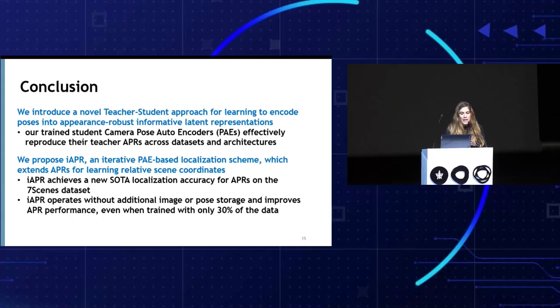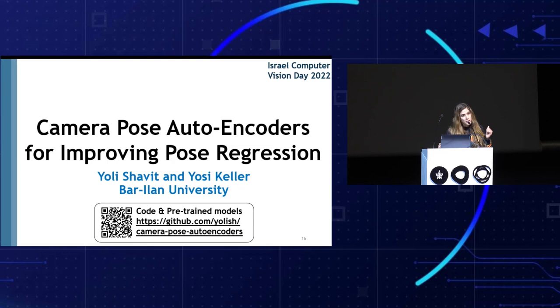To summarize, we introduced a novel teacher-student approach for learning to encode poses into appearance-robust, informative latent representations. Our goal was to improve absolute pose regression at minimal runtime and memory cost. We showed that trained students can effectively reproduce their teacher's performance, and the most important application — iterative absolute pose regression — achieves a new state-of-the-art on the Seven Scenes dataset, maintaining that performance even when training on only 30% of the data. Check out our ECCV paper and our IAPR code on arXiv.